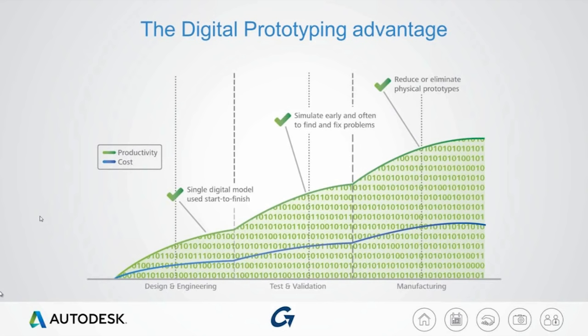This is really where digital prototyping comes into play. It helps us make great products in two ways: first, more product knowledge is available at the earliest stages, data loss is minimized as we move downstream, and fewer physical prototypes are needed — so productivity is increased while costs are dramatically reduced. Second, our ability to innovate is increased, meaning we can get better products to market faster, resulting in increased revenue and market share.